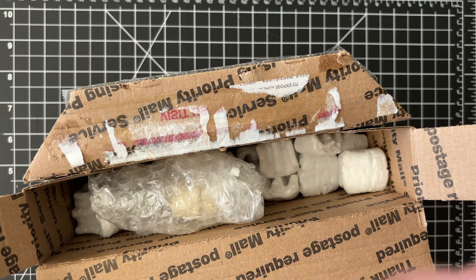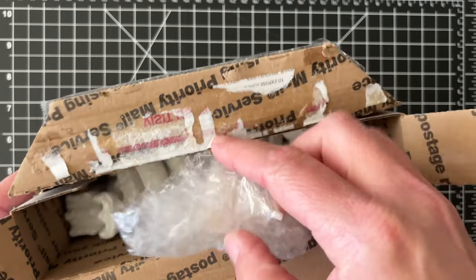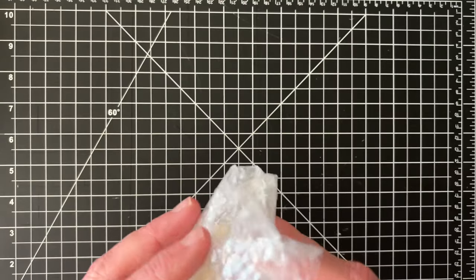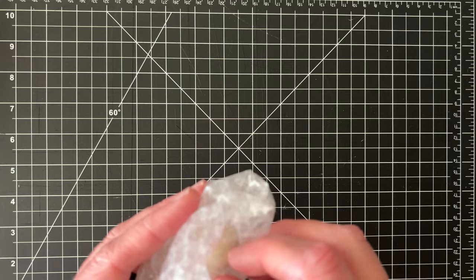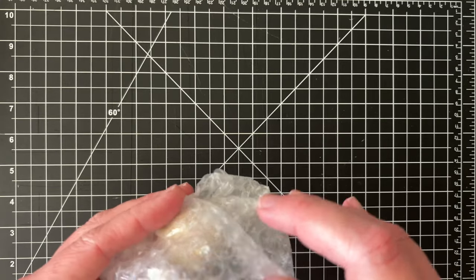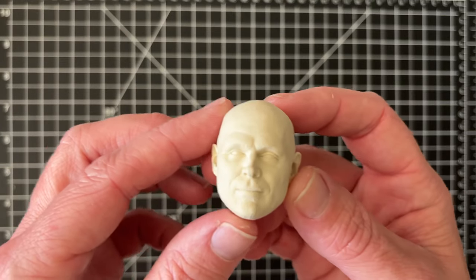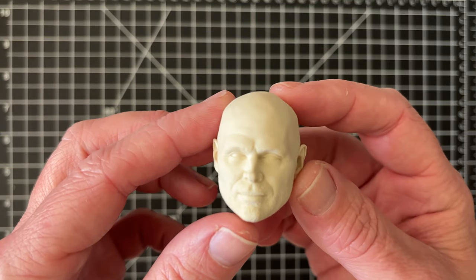All right, thanks to the miracle of editing, most of the packing peanuts are gone. I'm going to take this out, set those to the side. I am going to need to get this shipped off and get it painted. So I will reuse those and save the planet one packing peanut at a time. All right, here is that head sculpt.